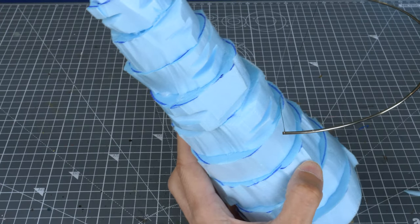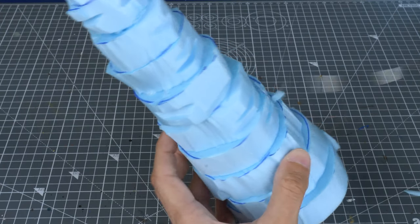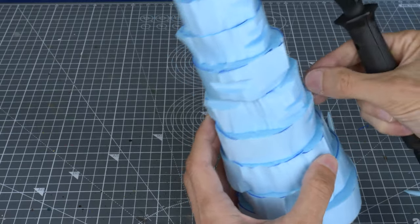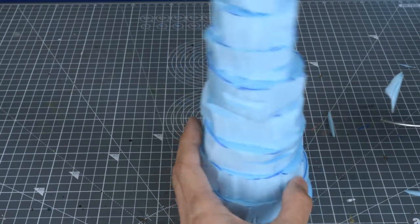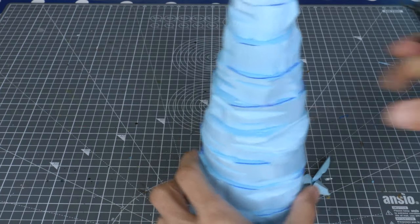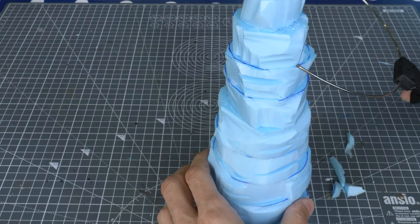I'm now using the hot wire cutter to firstly rough the texture up a bit by creating a series of indents. I'm also cutting away at the ledges formed by the individual blocks to disguise the underlying structure.